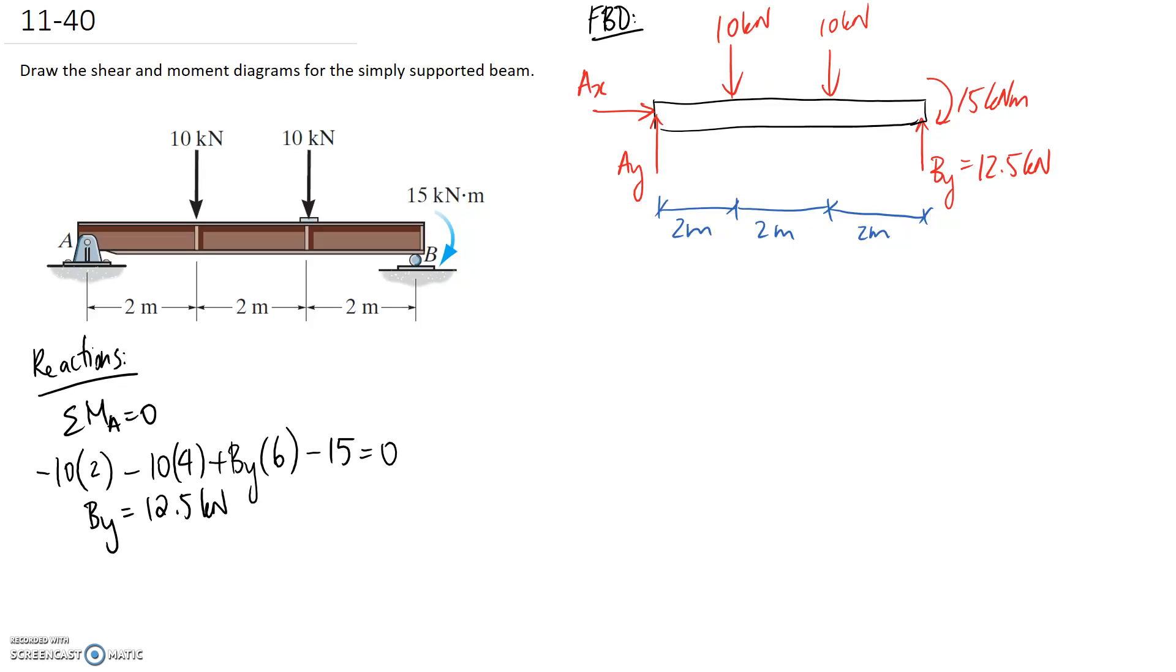Now we need to work out AY and we can get that by summing forces in the Y direction to be equal to 0. AY is going up. We've got two 10N forces going down and the 12.5 going up. We find out that our reaction is 7.5kN.